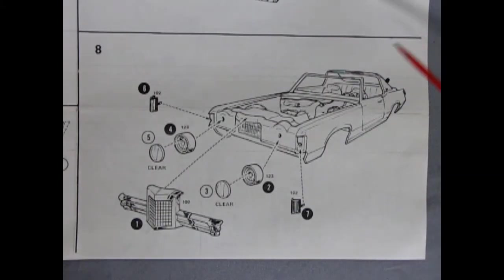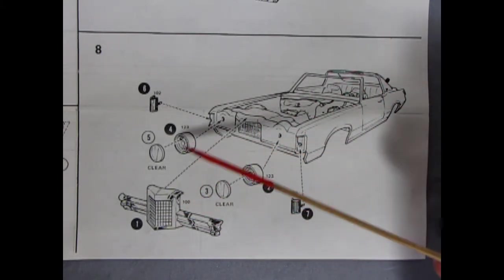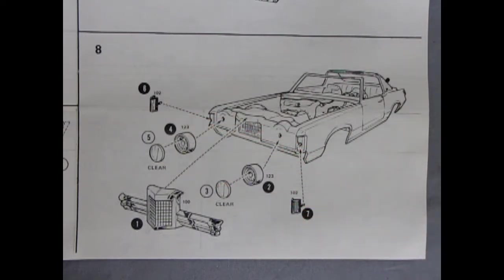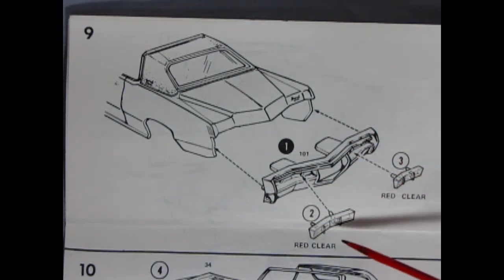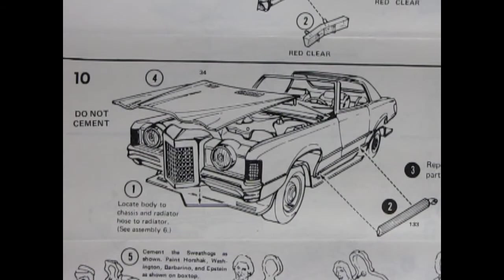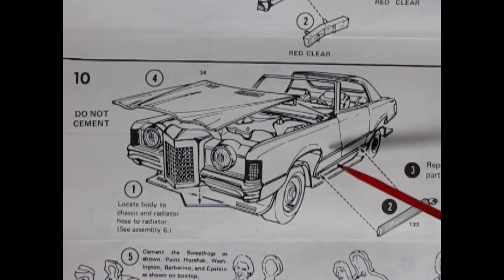Panel 8 shows the front grille being inserted as well as these nice big headlight rings and our headlights and then we have our side markers going in the front. Out back we have our rear bumper gluing into place and you also install the red tail lights and I do believe you paint one of these clear as a backup light. Panel 10 shows our hood being placed on and then our body dropping onto the chassis and then here we have these nice side pipes which will glue down here on the lower rocker panels.